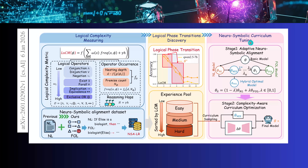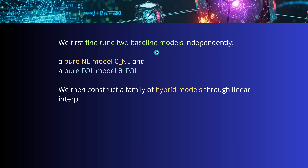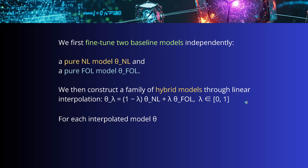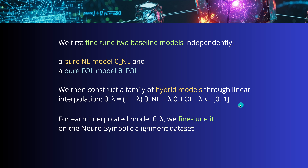The recipe is rather simple: first, fine-tune two baseline models independently — one pure natural language model (theta_NL) and one pure first-order logic model (theta_FOL). Then construct a family of hybrid models through linear interpolation using the formula (1 − λ) · theta_NL + λ · theta_FOL. For each interpolated model, fine-tune it on a specific neurosymbolic alignment dataset available in the literature.